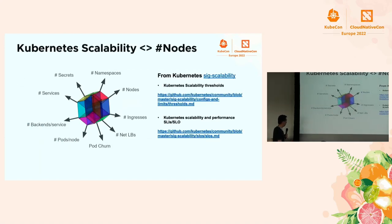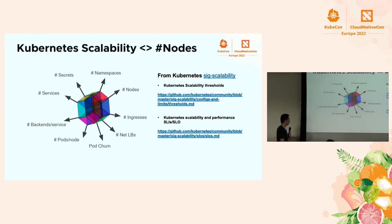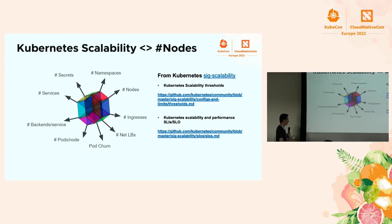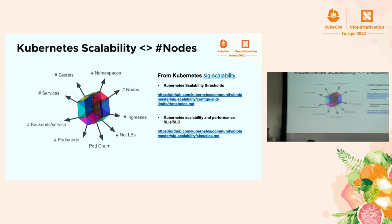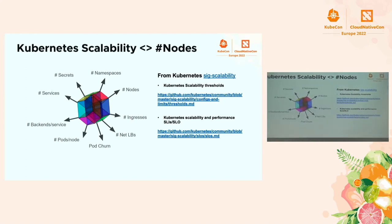For scalability, we cannot consider just the node count — there are multiple dimensions from Kubernetes SIG Scalability: number of namespaces, number of nodes, number of services, number of secrets, number of pods, number of ingress connections, and load balancers. If you increase one dimension, it can cause other dimensions to shrink. The SIG Scalability group defines limits and numbers for scalability SLOs and SLAs.